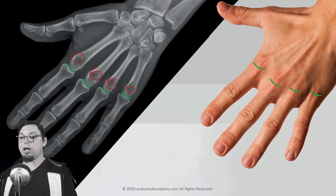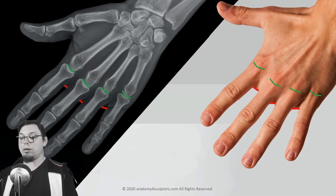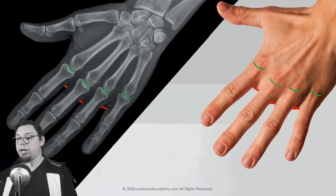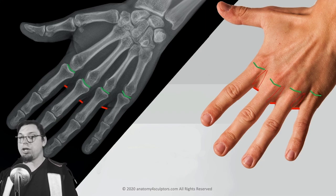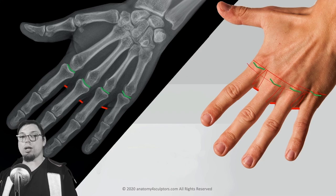You have the metacarpal bone articulating with the phalanges at the knuckles, but the actual fingers begin much later. You can see the phalanges all the way from the joint — those green ones are the real joints — but the actual separation of the fingers happens much further along.